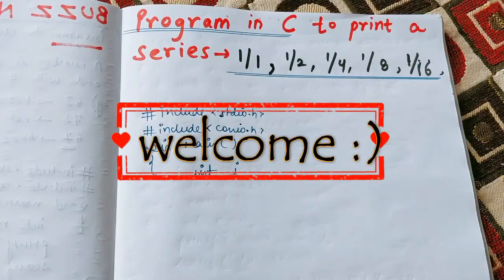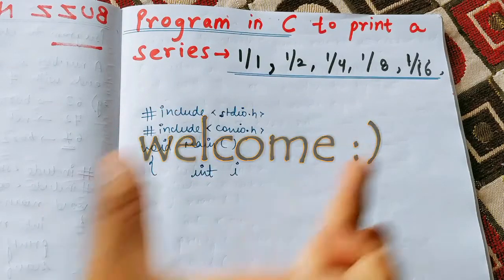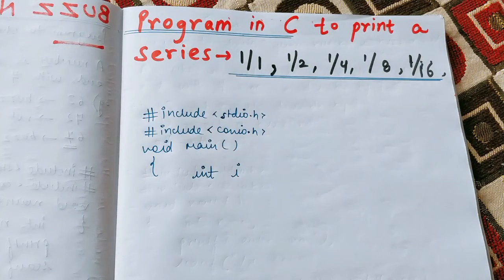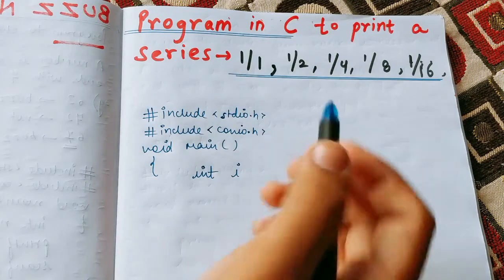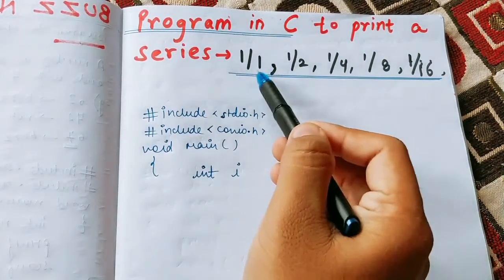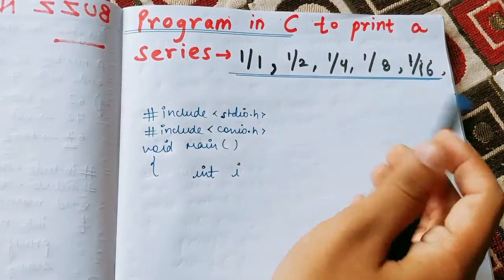Hello friends, welcome to my channel. My name is Abhishek. We'll see a program to simply print a series. We have to take input from the user — suppose we want to print the first 10 elements. We'll take the value of n from the user: how many elements you want in the series. If we input n equal to 5, we'll print the first five elements of the series.